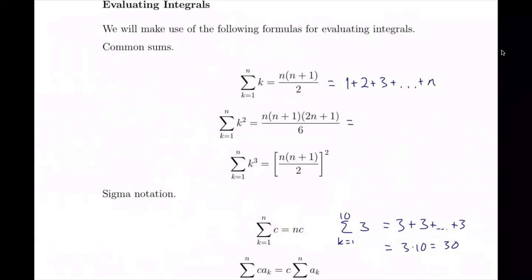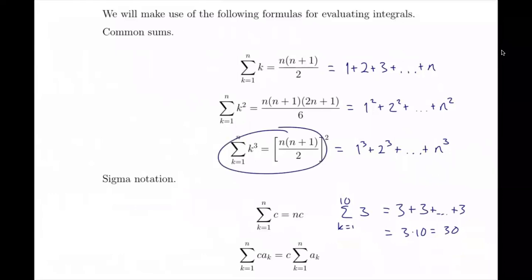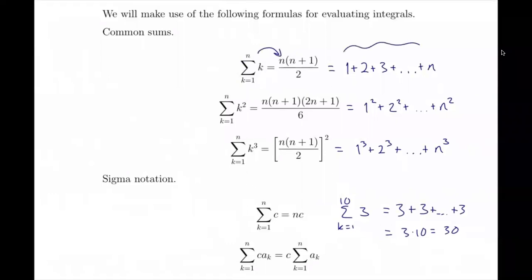The sum of the first n squares is 1 squared plus 2 squared up to n squared, and the sum of the first n cubes is 1 cubed plus 2 cubed and so on. These are analogous situations — the sum of first n cubes, sum of first n squares, sum of first n integers. The key is going from the sigma notation form to the closed rational expression. If we have a constant c with no dependence on k, the sum from k equals 1 to n of c equals n times c — for example, the sum from k equals 1 to 10 of 3 equals 30.